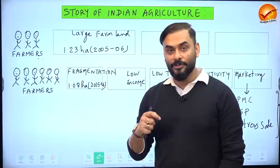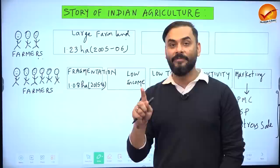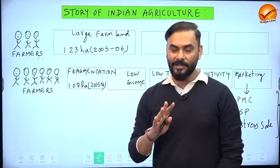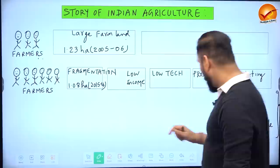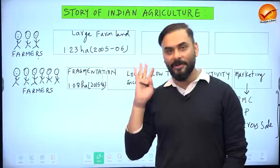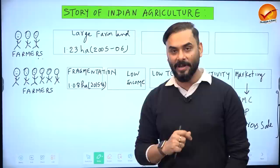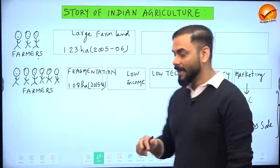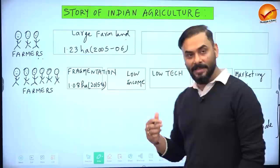The third option is distress sale — farmers sell at whatever price they get locally, even two or three rupees per kg, without going to APMC mandis or the MSP program. So because of land fragmentation and increasing population over time, these are the core problems the farming community has suffered.